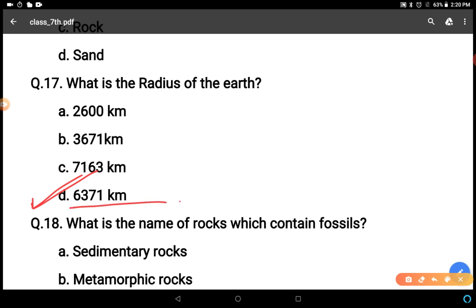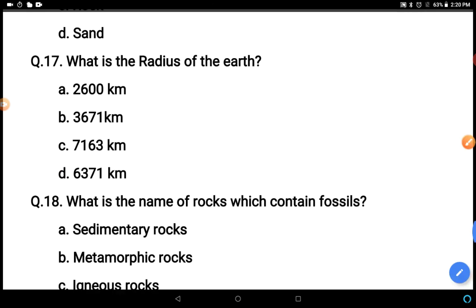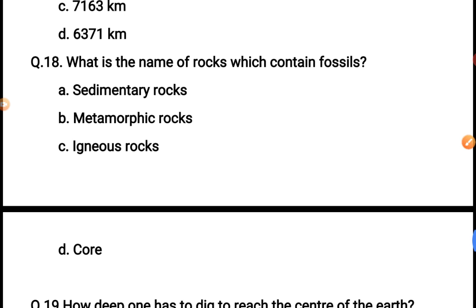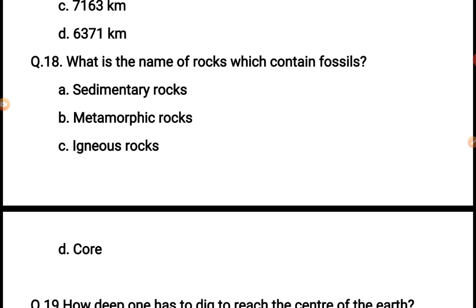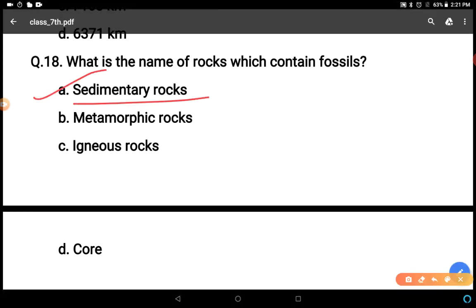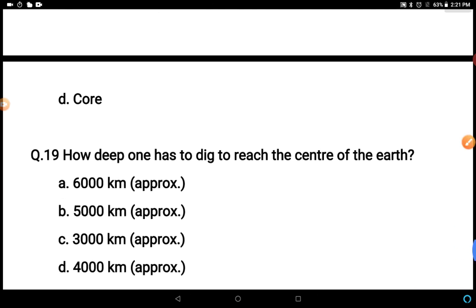What is the name of rocks which contain fossils? Also easy question. Sedimentary, metamorphic, igneous, core. The answer is sedimentary rocks because in the sediments, fossils deposited after the remains of plants and animals and then these are found in sedimentary rocks. So A is the correct answer.